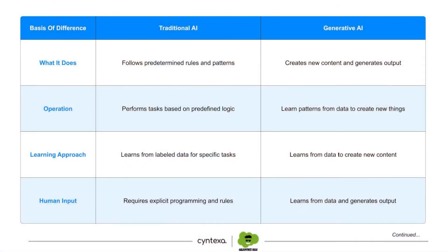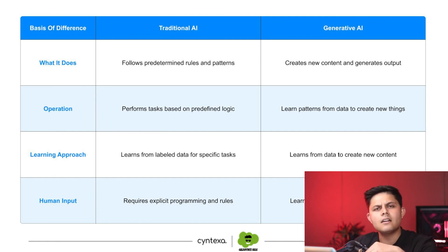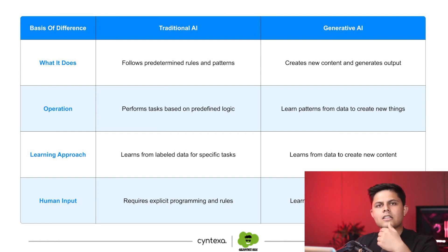Traditional AI performs only the tasks it is trained for, based on predefined logic. Generative AI learns patterns in order to create new data. Traditional AI is already trained and does not improve on itself, whereas generative AI improves on itself — whenever you give it a new prompt, it is not only generating new data for you but also training itself a little better using the prompts you have provided.